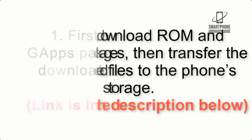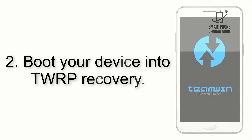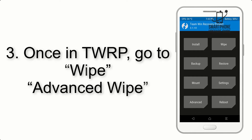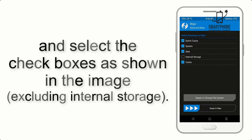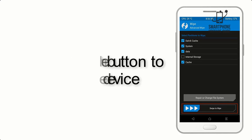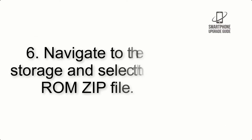The download link is in the description below. Step 3: boot your device into TWRP recovery. Once in TWRP, click on Wipe, then Advanced Wipe, and select the checkboxes as shown in the image, excluding internal storage. Step 4: swipe the button to wipe the device.